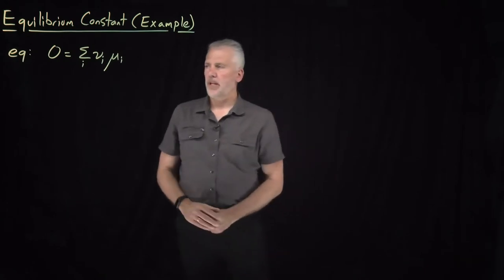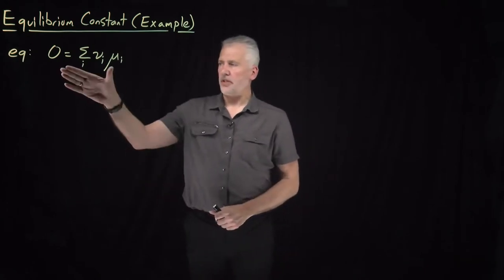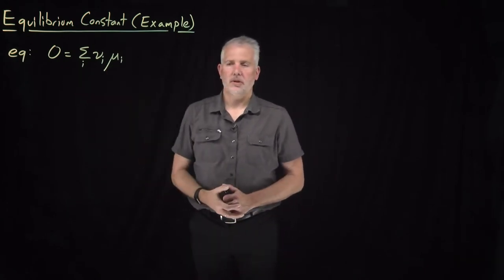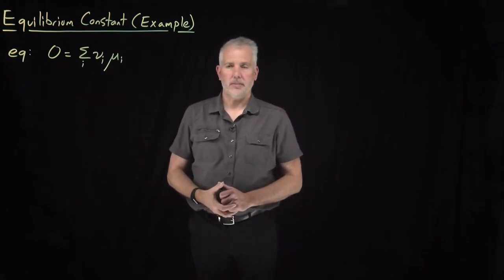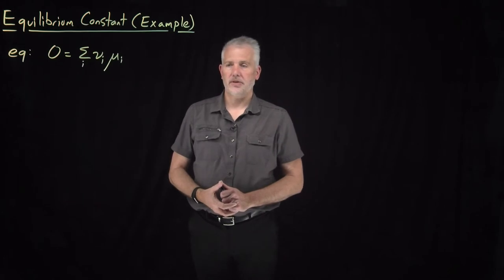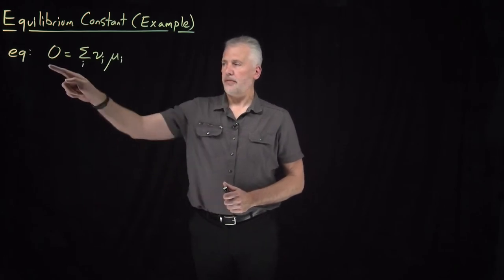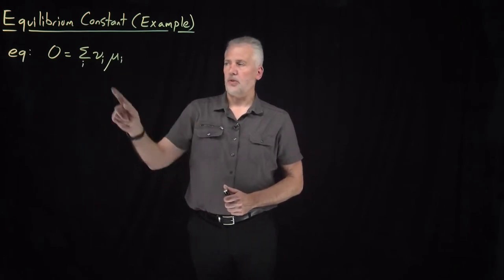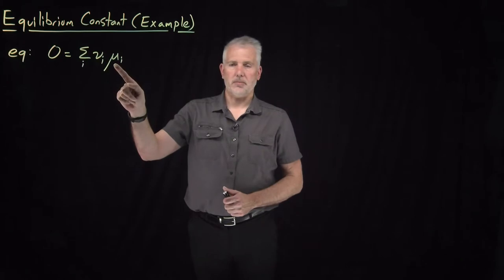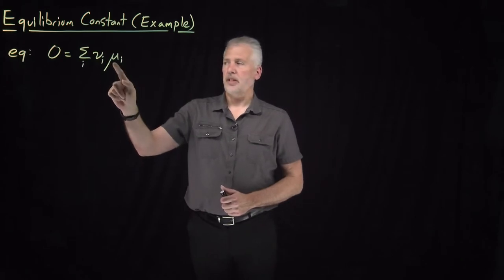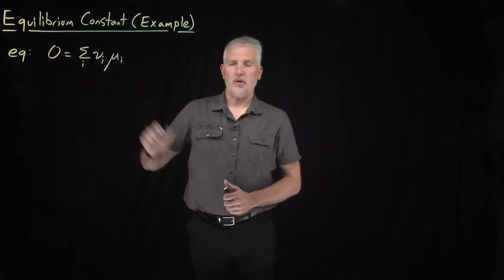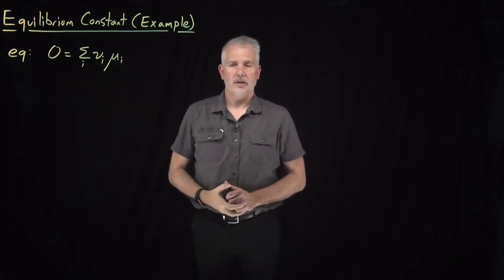We've obtained the condition for chemical equilibrium. We know a chemical reaction is going to be in equilibrium if this condition holds: stoichiometric coefficients multiplied by chemical potentials add up to zero for all the components of the reaction.